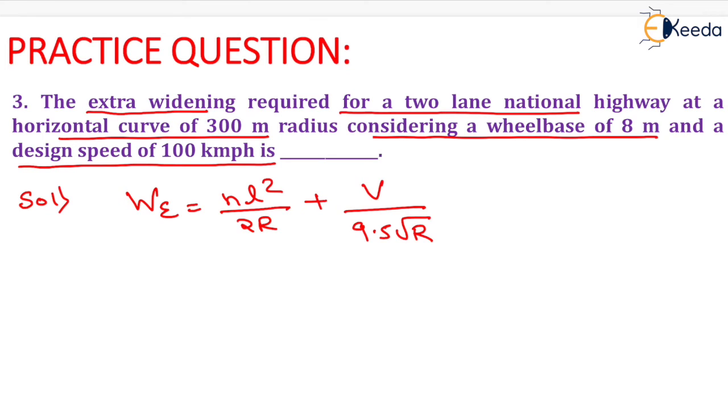Now the value of small n is given as 2 for two-lane road and the value of length of vehicle is given as 8. So it will be equals to 8 square and the radius of horizontal curve is given as 300 meter.